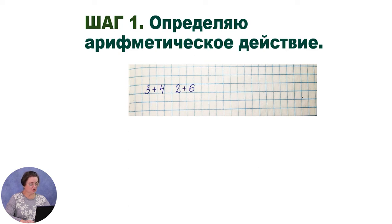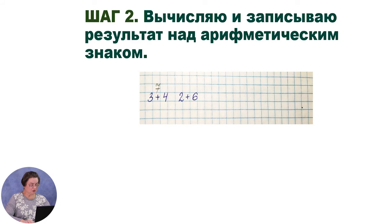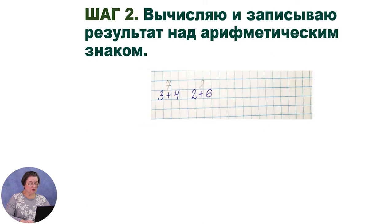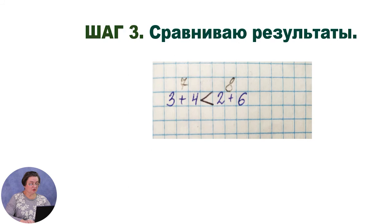Второй шаг — вычисляем. 3 и 4 — состав числа 7. Над знаком «плюс» карандашом пишем 7. 2 и 6 — состав числа 8. Над знаком «плюс» карандашом пишем 8. Переходим к последнему шагу — сравниваем: в левой части 7, в правой 8. 7 меньше 8 — значит, пишем знак «меньше». Пример решён.